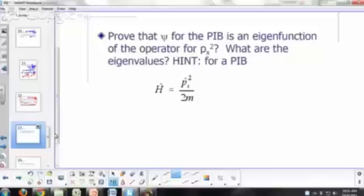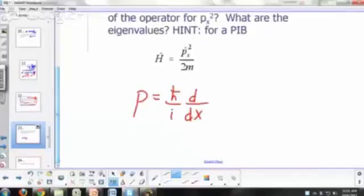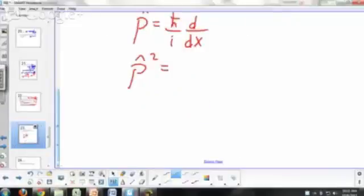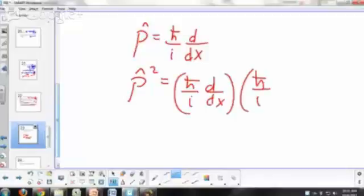You can go do this the long way. What's px squared? What's the px operator? H bar over i derivative with respect to x. So if you have the p squared operator, what would that be? You apply it twice, right? H bar over i, d by dx, and then h bar over i derivative with respect to x.